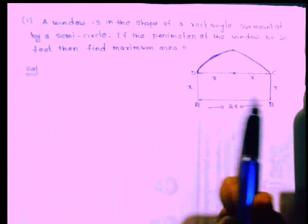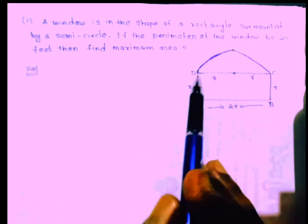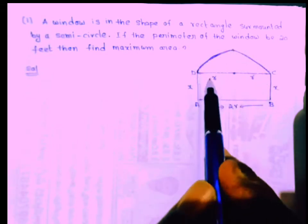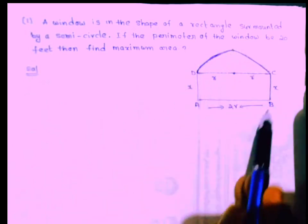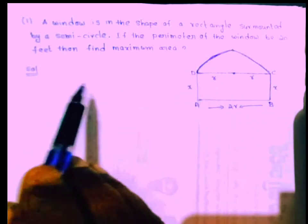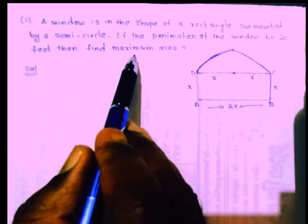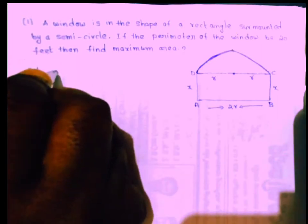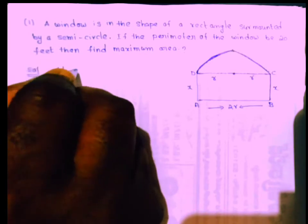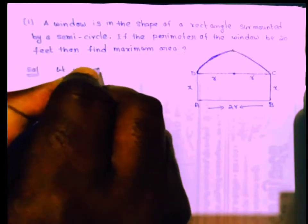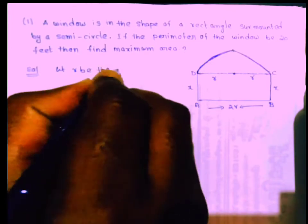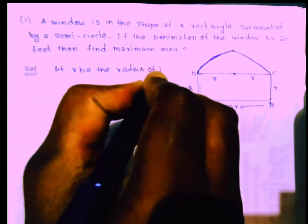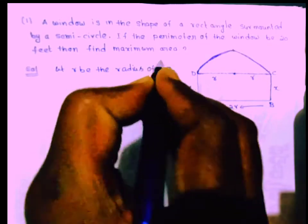This is the ABCD rectangle surmounted by the semicircle. The perimeter of the window is 20 feet, so we need to find the maximum area. Let r be the radius of the semicircle.